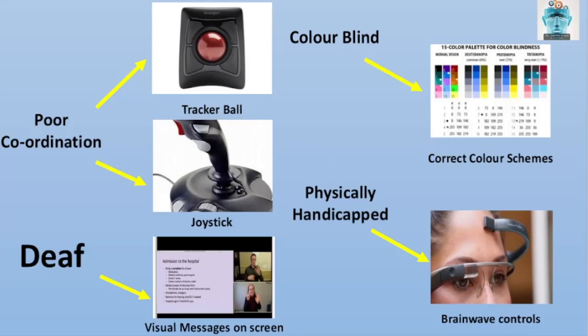If you've got a physical handicap, there is something like a brainwave control device, which attaches to the brain and those signals and information are passed directly to the interface.